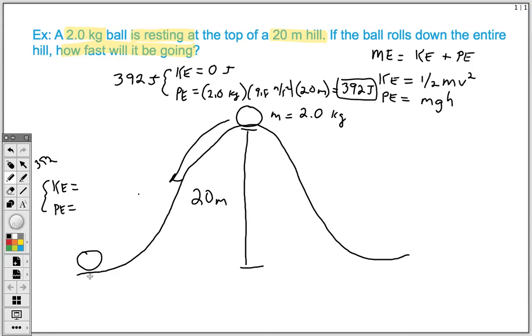So once we're at the complete bottom of the hill, our height is equal to zero, right? We're not high anymore. So if we plug that into this equation, 2 times 9.8 times zero, well, anything times zero ends up being zero. So zero plus what gives us 392? That's easy. 392.